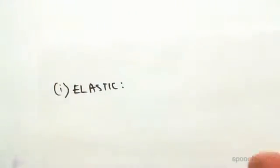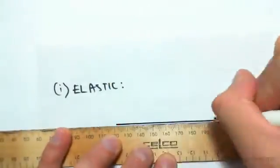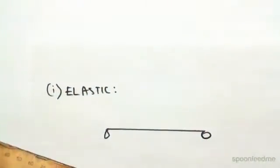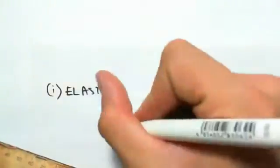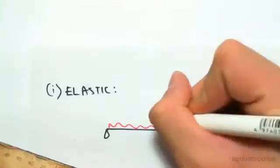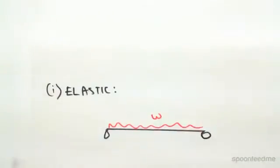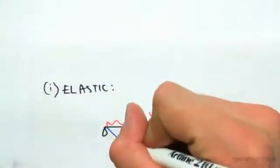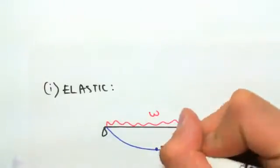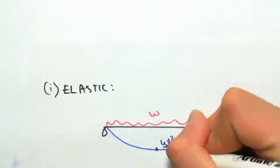So let's just say we have, for example, a simply supported beam subjected to a UDL. So there's our UDL. We know that it's going to deflect something like this, and the bending moment diagram would be WL squared on 8.